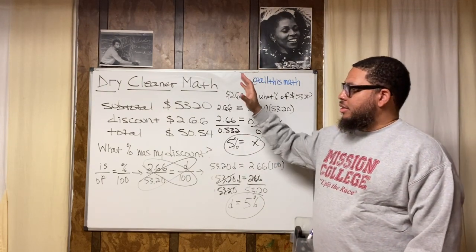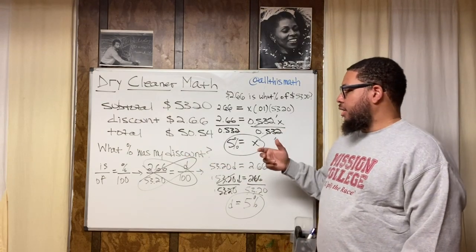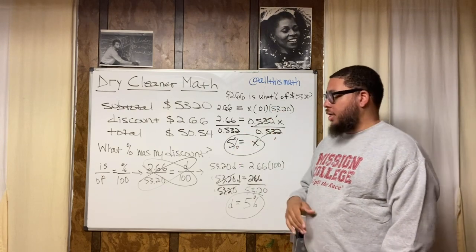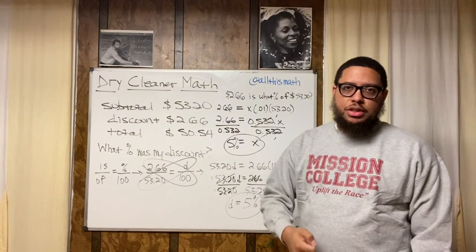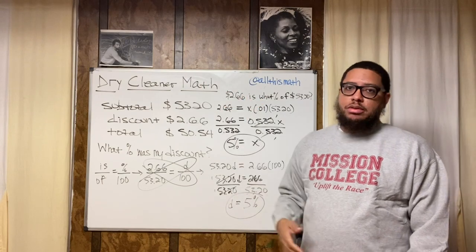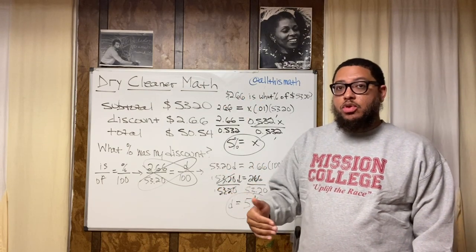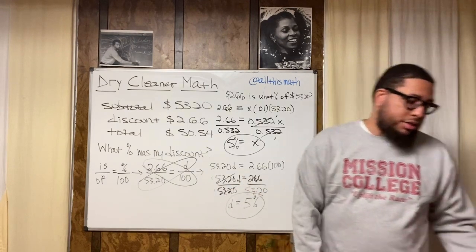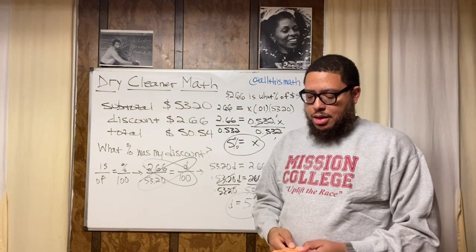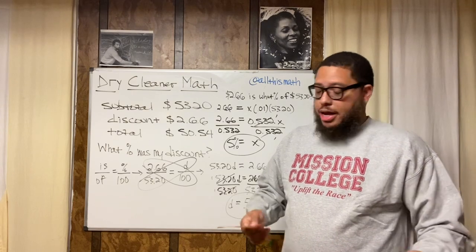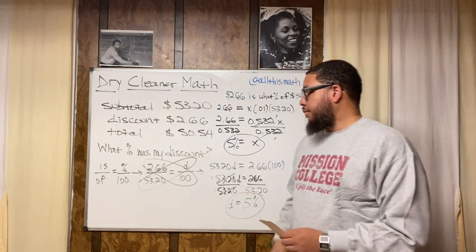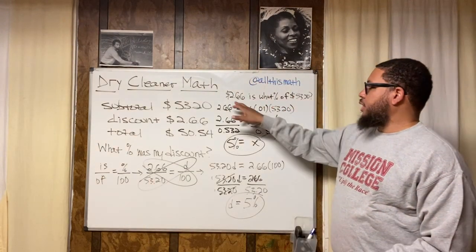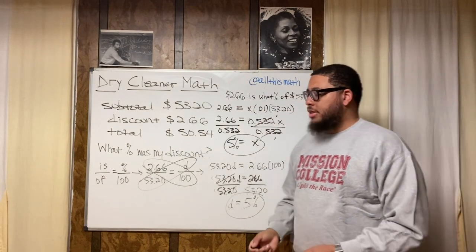Support your HBCUs — give money, promote, visit, attend sporting events. Hopefully you learned something today. You can use any receipt as a teachable moment — anytime you shop or spend money, that's an opportunity. Show someone else how to calculate percentages so we can all deal with everyday math. I gave you two methods: the proportion method and the equation translation method. Go practice, and I'll catch you on the next video. Peace.